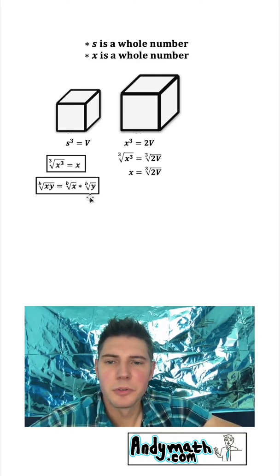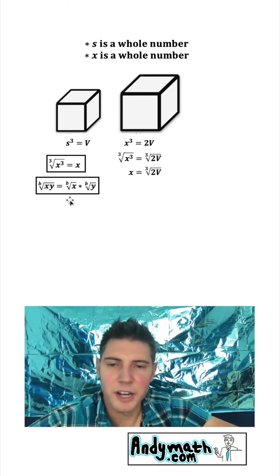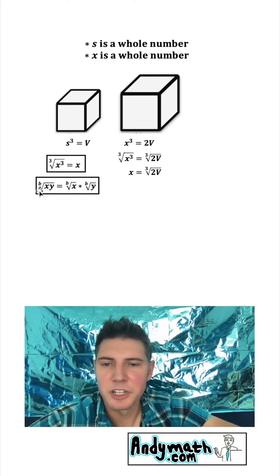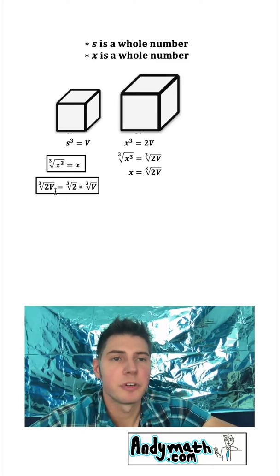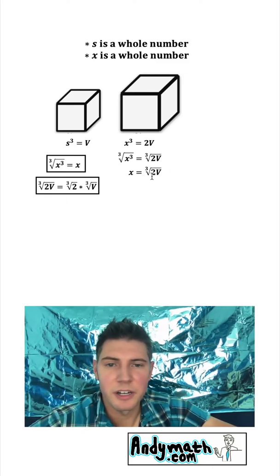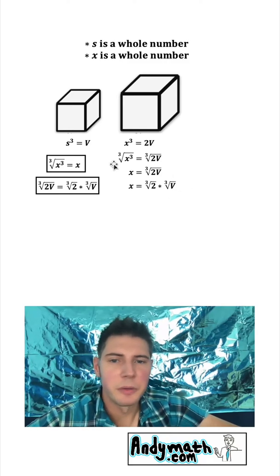Next, we'll apply another property of roots. That is that you can split it up into two separate roots. So this root of xy is equal to the root of x times the root of y. We can change the b into a 3 and the x into a 2 and the y into a capital V. And now you can see what this thing right here changes into this right here. And we can bring down the x.